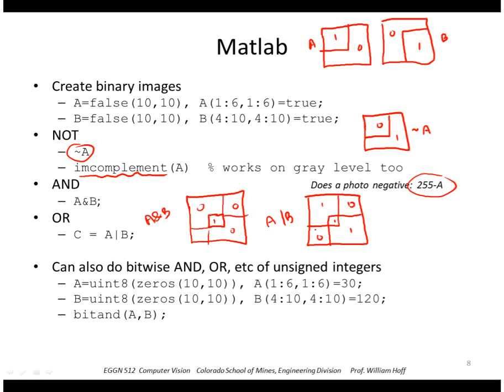You can also do a bitwise AND or etc. of unsigned integers. So instead of each pixel representing a true or false, each pixel is an 8-bit number. So, for example, if I put 30s in that upper left-hand corner, a 30 in binary, recall that a binary number is 1s, 2s, 4s, 8s, 16, 32, 64, 128.